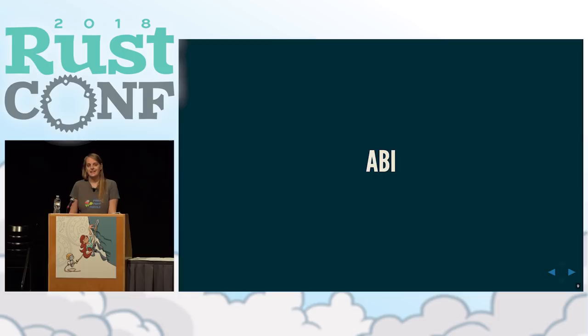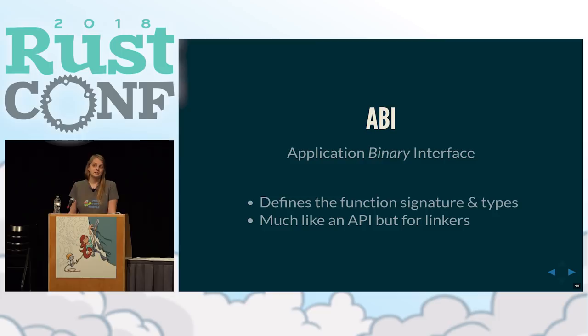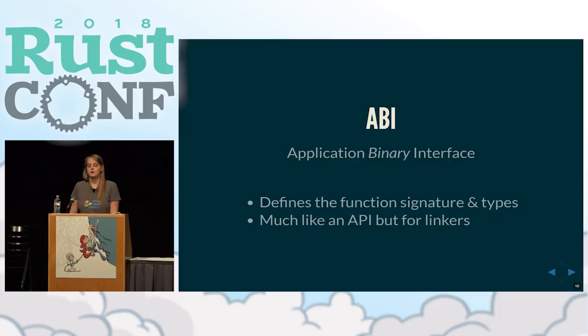The second thing I want to get out of the way is ABIs. ABI stands for Application Binary Interface. It's basically like an API but for your linker or your compiler — not something that humans would ever interact with. It specifies how a function looks in memory, how data is laid out in memory, and depending on the ABI, you can make certain pieces of code talk to each other. If the ABI is wrong, it won't link and it won't compile.